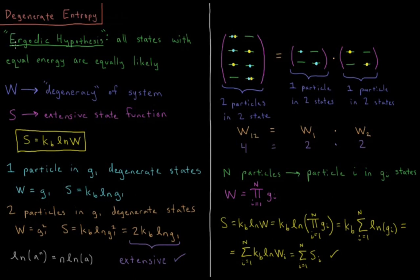We'll start with what we looked at in statistical mechanics: the ergodic hypothesis, which says that all states with equal energy are equally likely to be observed. If we have a system where we just have a bunch of energy levels which are all equally likely, so they all have equal energy, we want to see what is the entropy of that system.